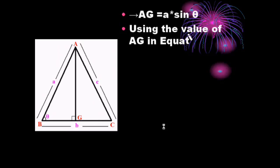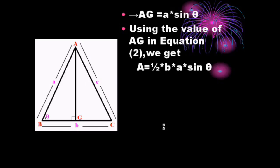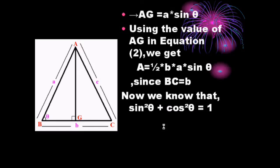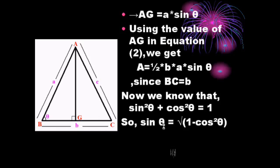Using the value of AG in equation two, we get A = ½ × b × a sin θ, where a sin θ stands for AG and b stands for BC. Since sin²θ + cos²θ = 1, sin θ = √(1 − cos²θ). So capital A = ½ × b × a × √(1 − cos²θ).